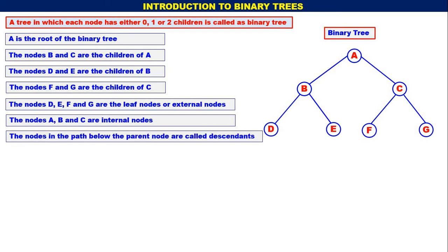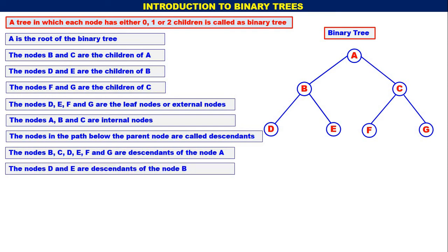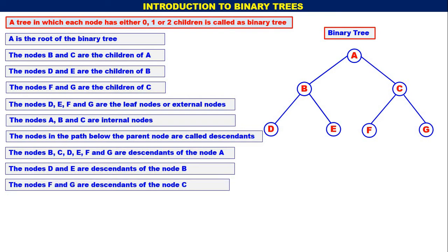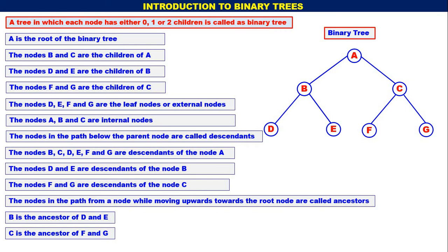The nodes in the path below the parent node are called descendants. The nodes B, C, D, E, F, and G are descendants of node A. The nodes D and E are descendants of node B. Similarly, the nodes F and G are descendants of node C. The nodes in the path from a node moving upwards towards the root node are called ancestors. B is the ancestor of D and E. Similarly, C is the ancestor of F and G.